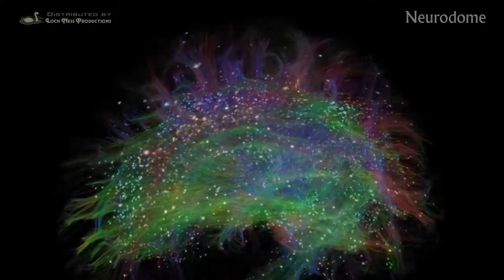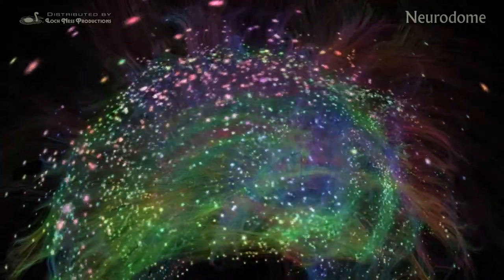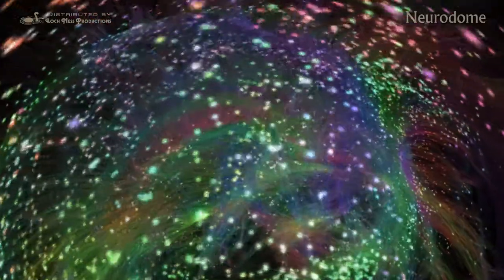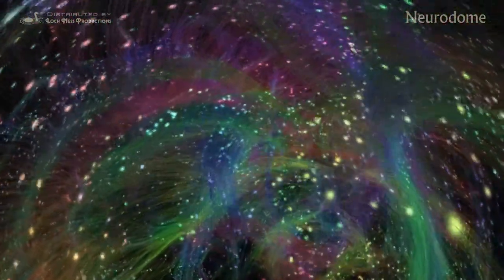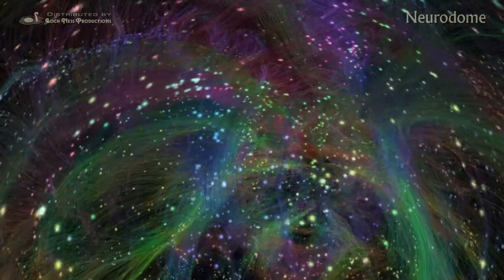These pathways constitute the circuitry for interpreting the world. Our retinas detect light. From that we infer movement, shape, the name of what we see, and how we feel about it.